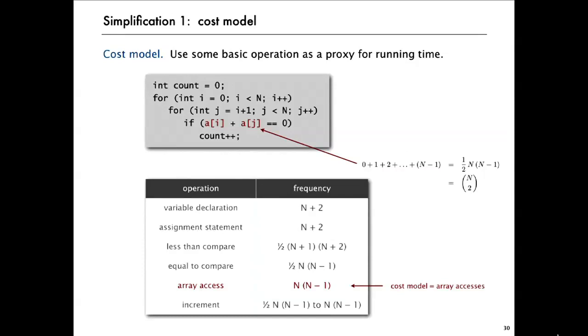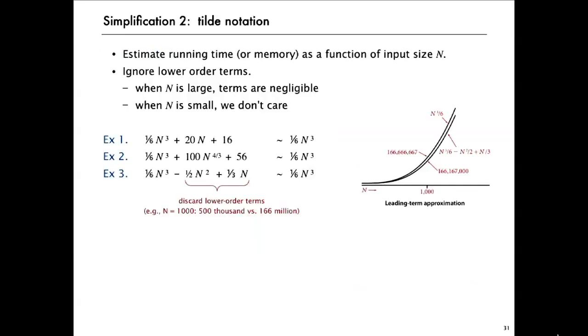Rather than going in and counting every little detail, we take some basic operation that's maybe the most expensive in terms of cost times frequency and use that as a proxy for the running time. Essentially making the hypothesis that the running time is going to grow like a constant times that. So in this case, we're going to pick array accesses. That's the first simplification.